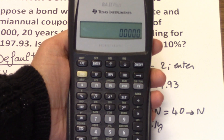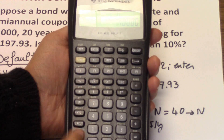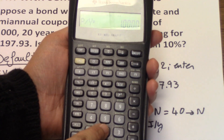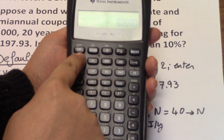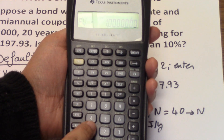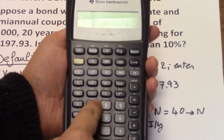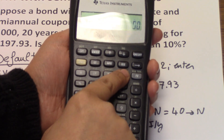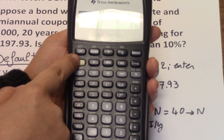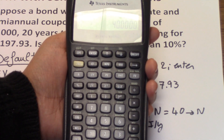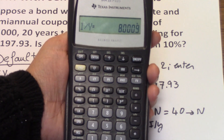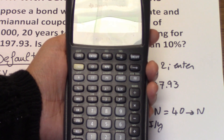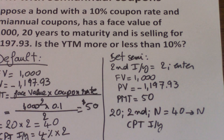First, set the calculator to semi-annual by pressing 2nd I/Y, entering 2, pressing Enter, then the down arrow. Clear your work, then input: FV = 1,000; PV = negative 1,197.93; PMT = 50; then 20, 2nd N, N. Now compute I/Y and you get 8% directly — the annual yield to maturity. The calculator gives you the annual yield to maturity directly, which is the answer to this question.